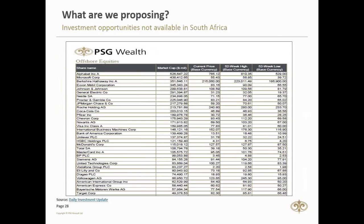How do you know what shares to buy offshore? This is the biggest challenge for most people. The JSE has 450 companies; the New York Stock Exchange has more than 8,000. On our daily newsletter — our daily investment update — we give a guideline of offshore equities that we at PSG are looking at. This is a starting point I suggest you guys look at.